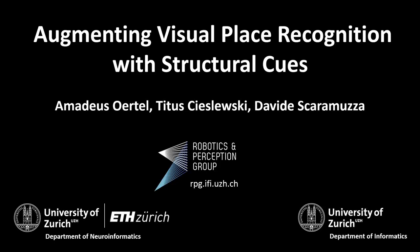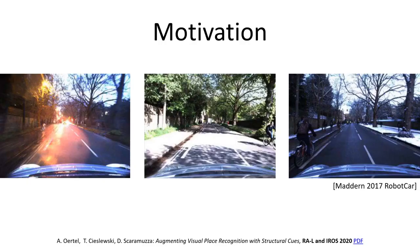Hi, my name is Amadeus and in this presentation I'm going to give a short overview of our work on augmenting visual place recognition with structural cues. Place recognition is a key ability for localization and autonomous navigation, especially in GPS-denied environments.